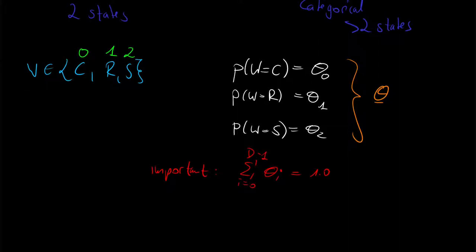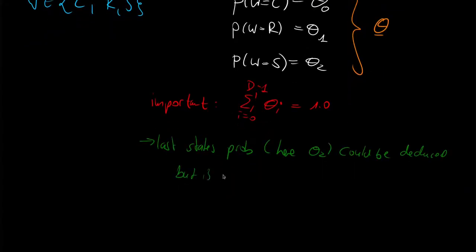So, and also something important here, it is really common for the categorical to save the last state. So the last state's probability, so in our case theta two, could be deduced from the others, but is saved commonly. And this is different in contrast to the Bernoulli, where the second state's probability, so for instance the probability of the weather being bad, can be deduced from the probability of the weather being good, so it is commonly not saved. But here it is done.